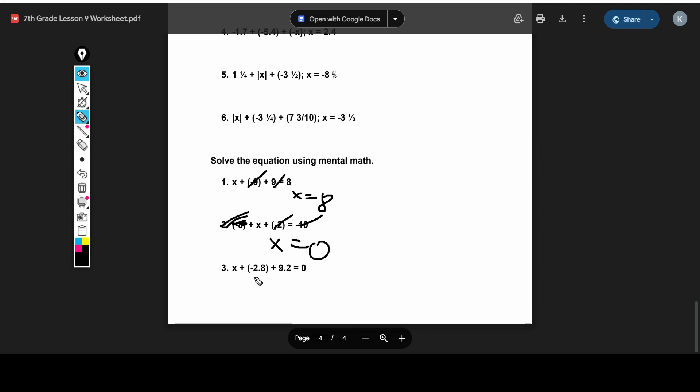And lastly, we have x plus negative 2.8 plus 9.2 equals 0. So negative 2.8 plus 9.2, we can try to find that out. That would be 6.4. And that means x is equal to negative 6.4 because 6.4 has to be subtracted by 6.4 to get 0. You have to subtract itself. So x equals 6.4, or negative 6.4.